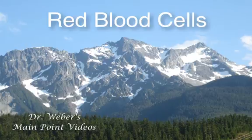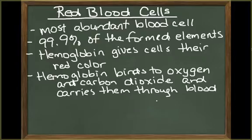This segment is on red blood cells. Red blood cells are the most abundant blood cells, accounting for 99.9% of the formed elements. They give whole blood its deep red color because they contain the red pigment hemoglobin.